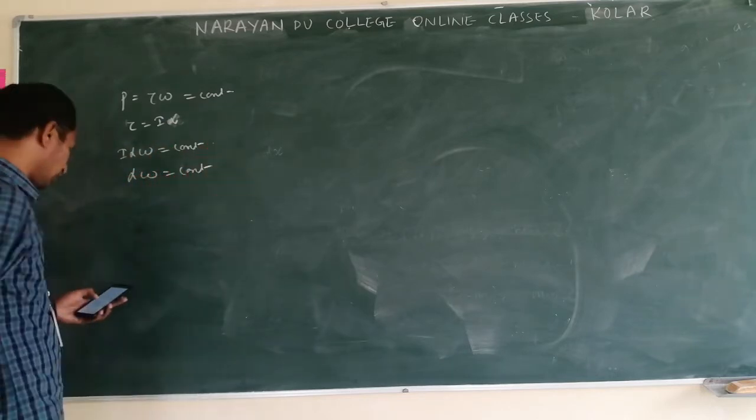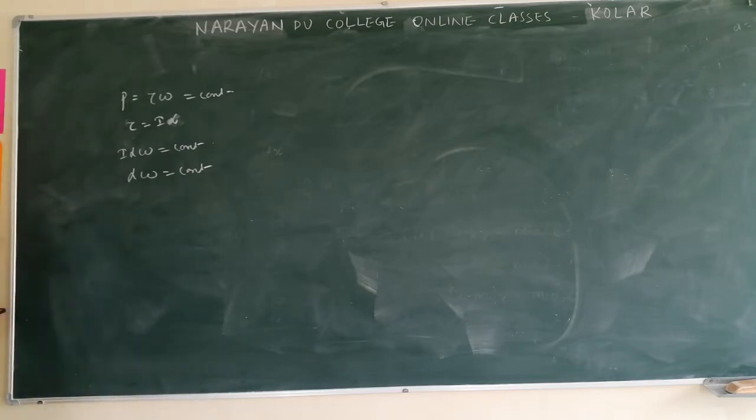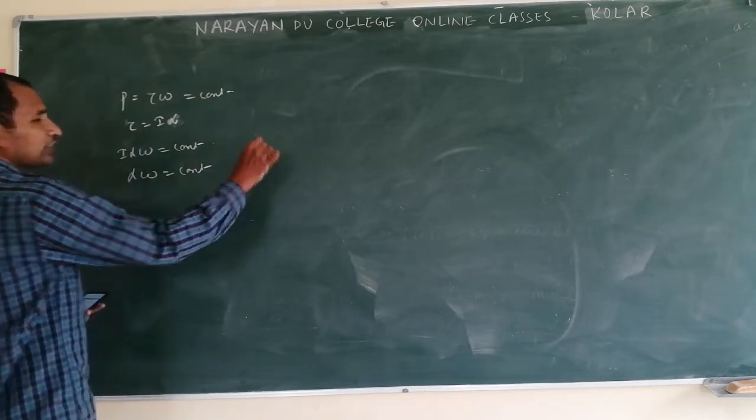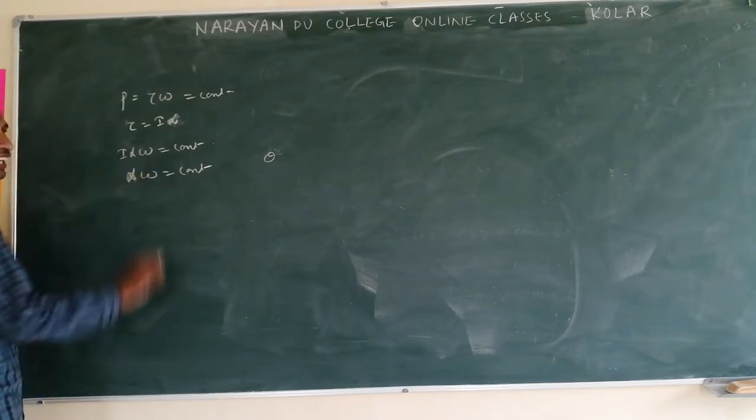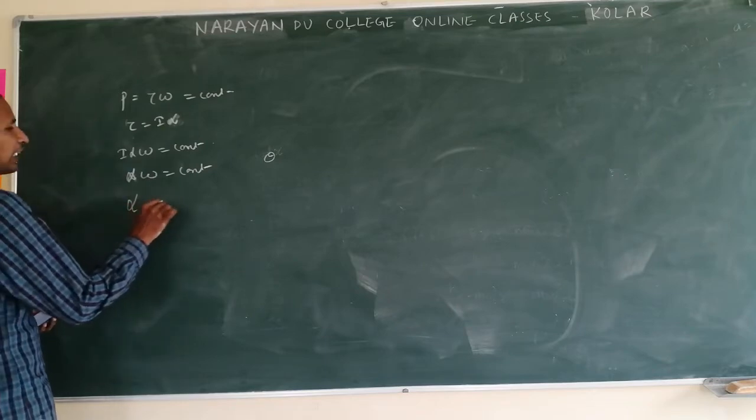Alpha omega is equal to constant. They are asking the relation between the angular velocity of the disc and number of rotations. Number of rotations means theta. So alpha, how will you write this? This is the angular acceleration alpha.